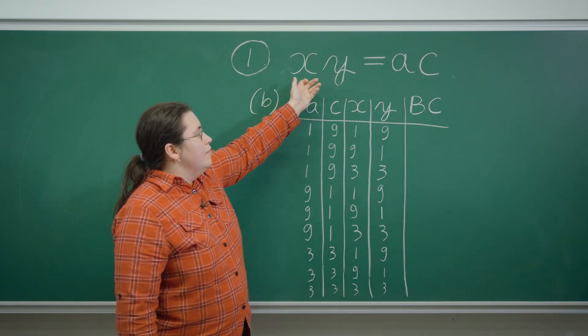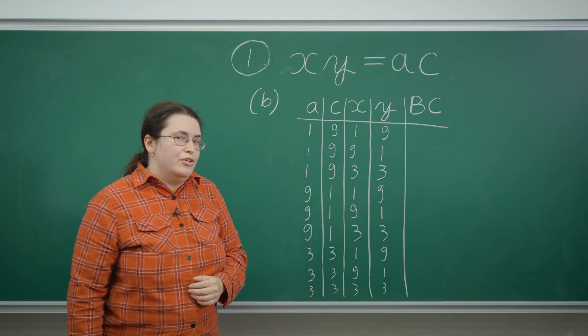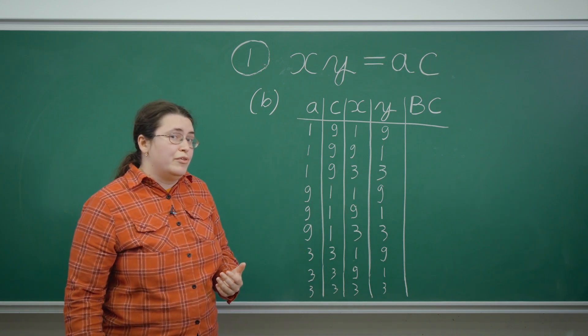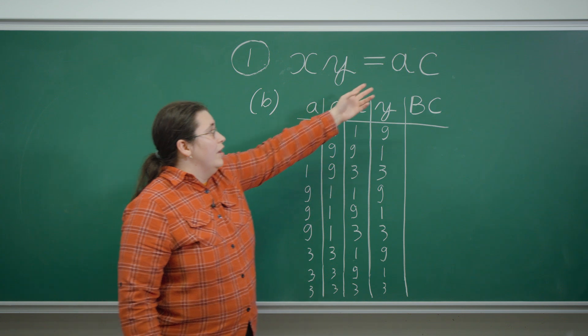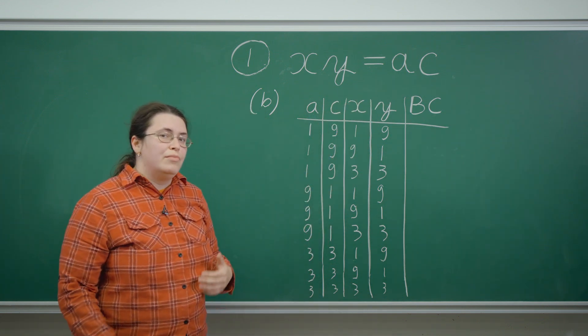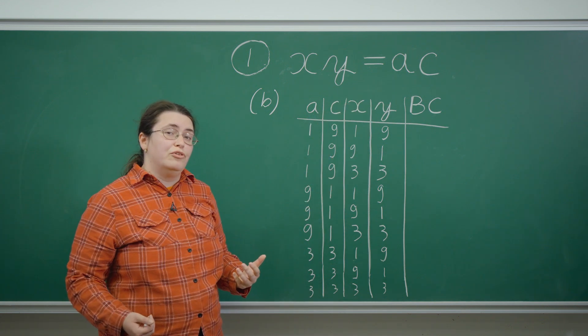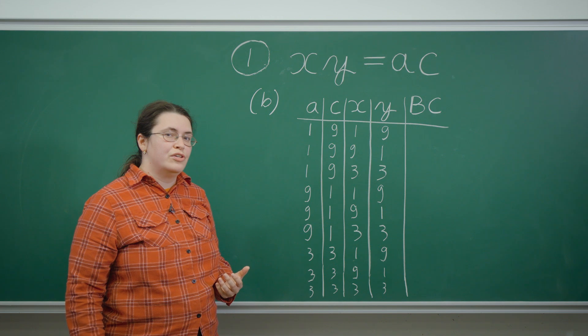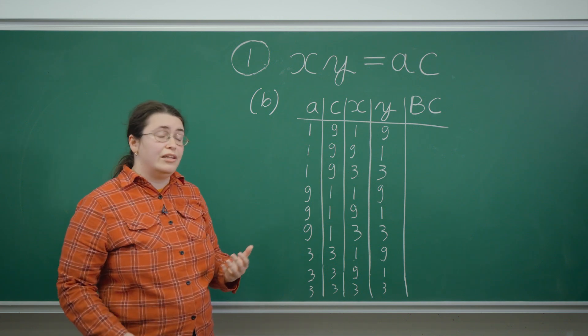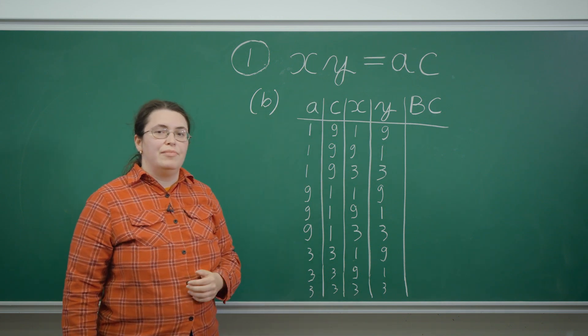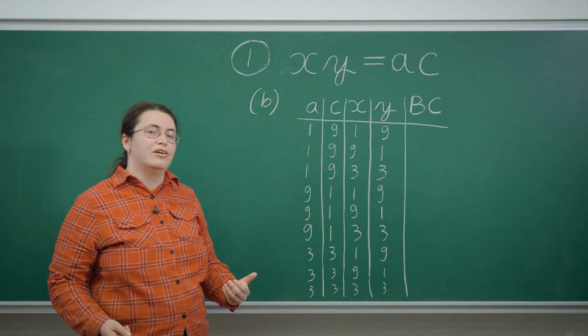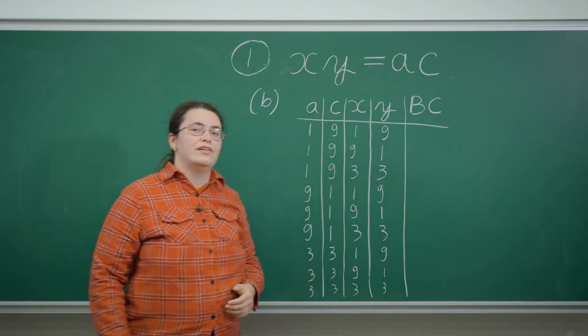We know that X and Y have to be integers based on the setup of the question where we know that A and C are integers, but also the side lengths of the original triangle are integers. And we calculate X and Y simply by taking the difference between the side lengths of the triangles and the side lengths of the rectangle.